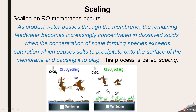When we use reverse osmosis for the production of pure water, water passes through the membrane and we get a product water. The remaining feed water becomes increasingly concentrated in dissolved solids. When the concentration of scale-forming species exceeds saturation — that is, their concentration is so high they can no longer remain dissolved — this causes salts to precipitate onto the membrane surface and plug it. This process is called scaling.